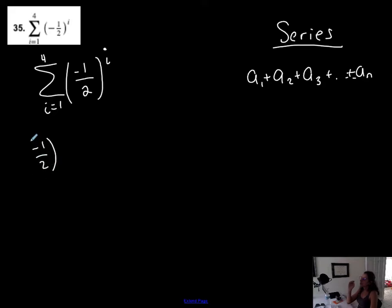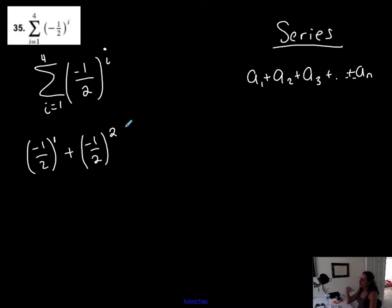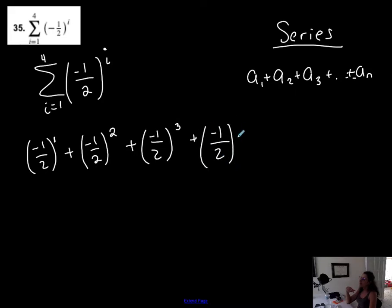My first term starts with negative one-half to the i, and i is starting at 1. So negative one-half to the first power is my first term. Plus — because summation notation means I'm creating a series — the next integer is 2, so I replace i with 2 for the second term. Then negative one-half to the third, plus negative one-half to the fourth. I stop here because the notation tells me to take the sum of terms only up until i equals 4.